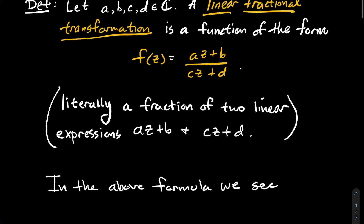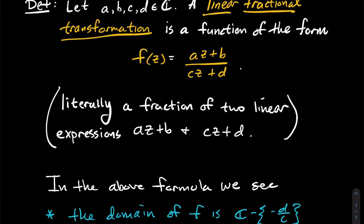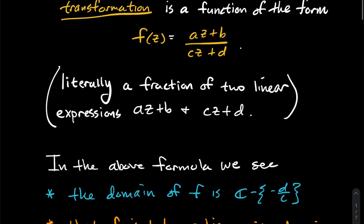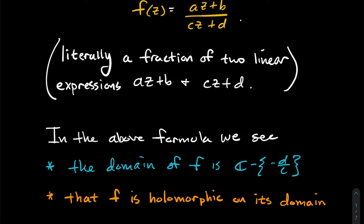Now, in the above formula for f, we want to notice a few things. The first thing is we can't plug in -d/c because that gives you zero on the bottom. So the domain is all complex numbers except for -d/c. Next, this linear fractional transformation is going to be holomorphic on its domain — for all complex numbers except -d/c — and I'm assuming c is non-zero.